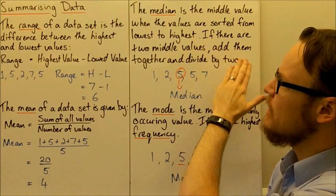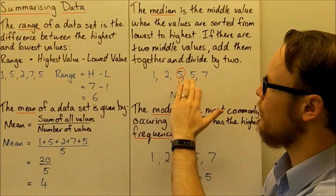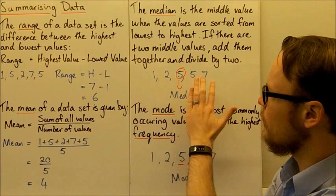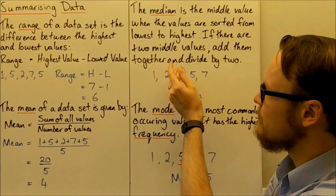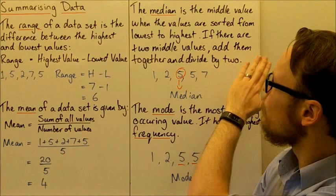So if we have 1, 2, 5, 5, 7 — put in order from lowest to highest — the middle value, going in from both sides, is 5. So the median for this data set is 5.